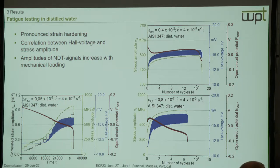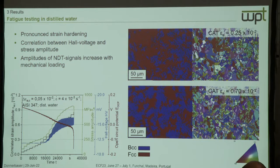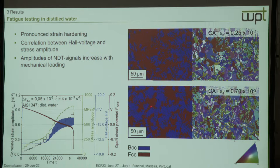At the high 0.8 percent strain amplitude we get higher levels in the Hall voltage — about 16.5 mV — and it reaches saturation faster. The stress amplitude reaches only about 500 MPa compared to 800 MPa at 0.8 percent. EBSD mappings from specimen cross-sections post-test show that at 0.25 percent strain — very low plastic strain — we basically have no martensitic transformation, only about 5 percent more than initial state.